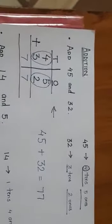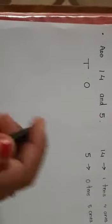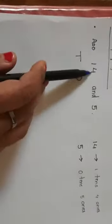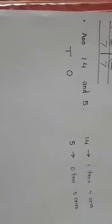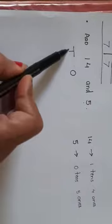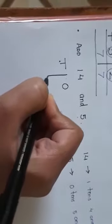Now let us see one more question. Okay? Now the next question is add 14 and 5. Okay? Now hum pahle do houses bana leenge. Okay? That is the tens house and the ones house. Ye ham ne bana liya. Right? So I am going to divide it. Like this. So I have divided it.